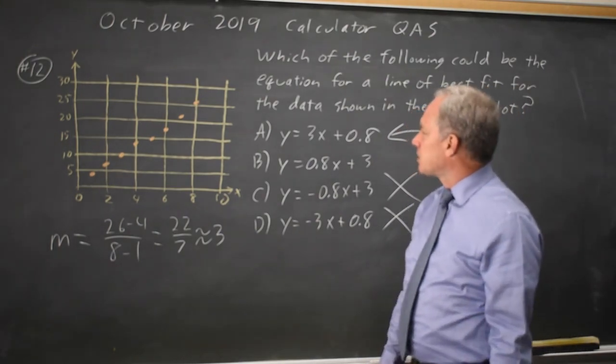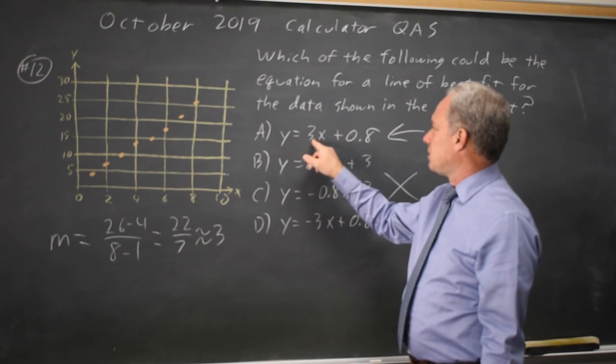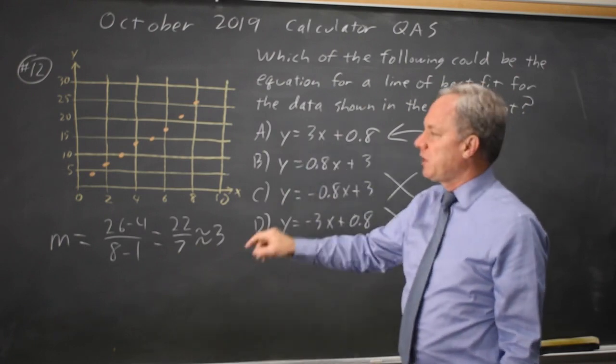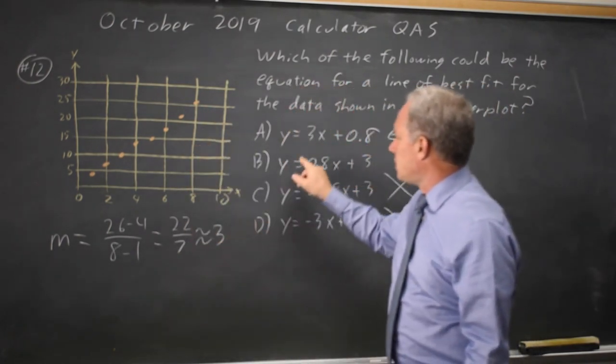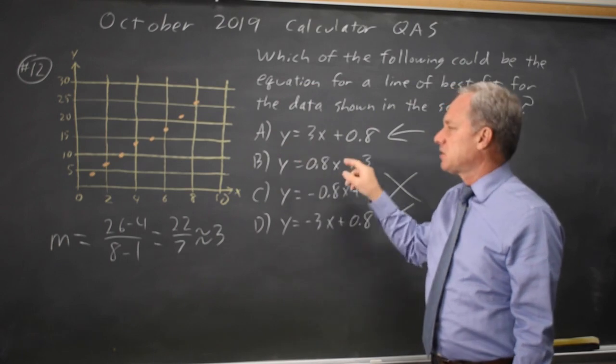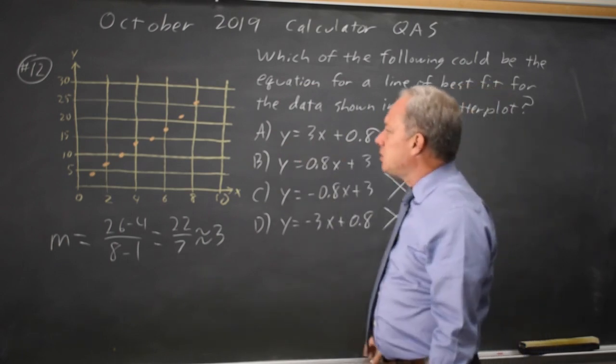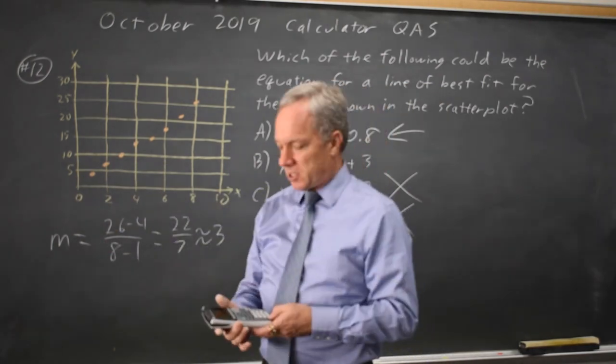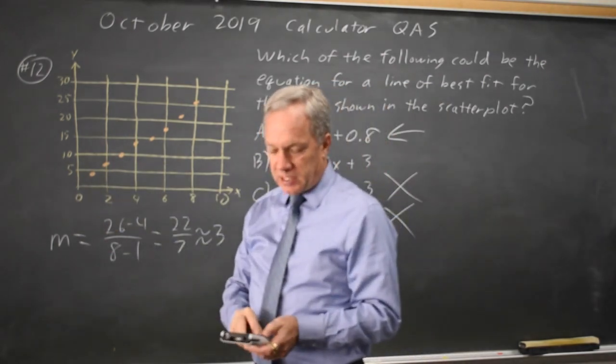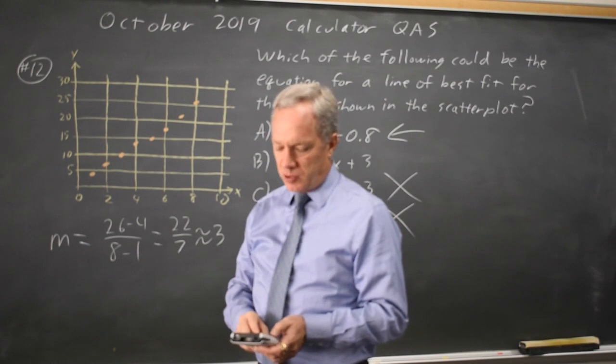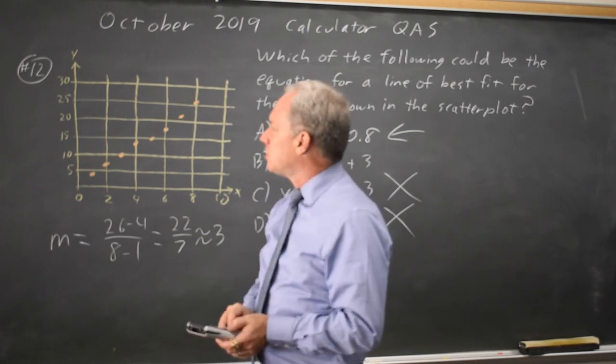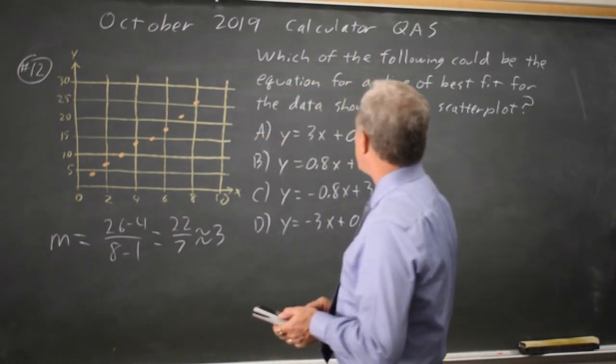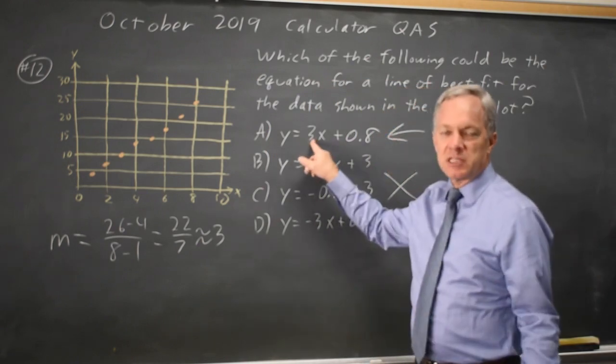If you look at these numbers, what they've given you is they're asking whether the 3 that I calculated here is the x coefficient or the constant. And if I put all the points into my graphing calculator under stat edit for the TI-83 or 84, I could get an approximate equation for the line of best fit, and it would be very close to choice A.